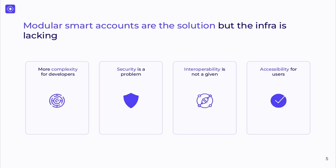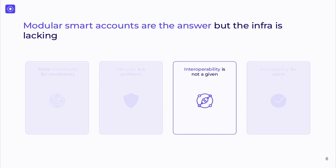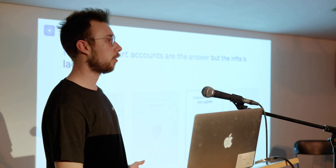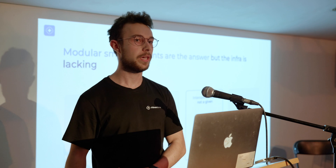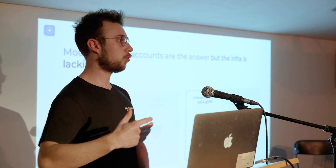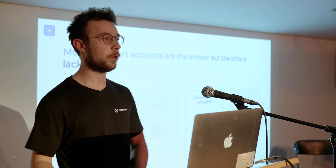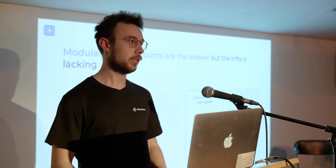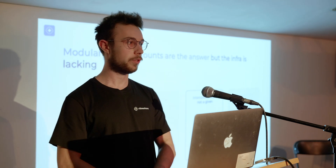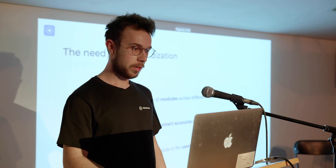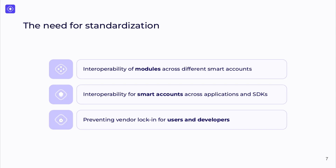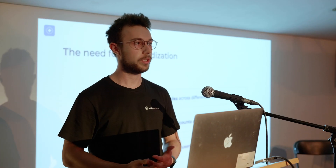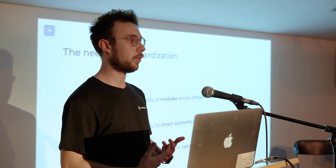Modular accounts are starting to take off, but the infrastructure is still lacking, and importantly, interoperability is not a given. So far we've seen different modular accounts with different architectures, different interfaces, and modules used in different ways. For module developers, this means you currently need to build the same module multiple times for every modular account — one for Safe, one for Biconomy, one for Kernel, and so on. That is the core need for interoperability that standards in this direction should aim to solve.